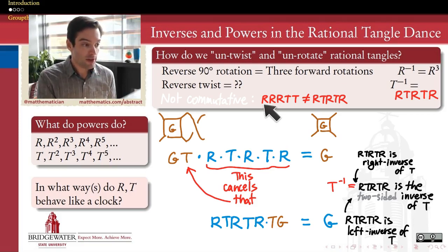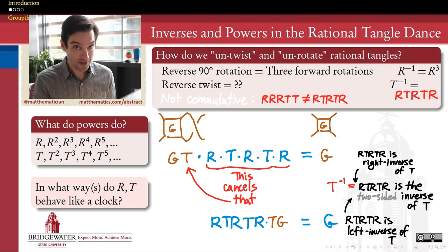For example, if you were to form the tangle that corresponds to the dance RRRTT, you would get a very different tangle than the one that you would get by doing TTRR. It's the same number of rotates and twists done in a different order, and when we do them in a different order, the tangle that we get ends up being a different tangle.